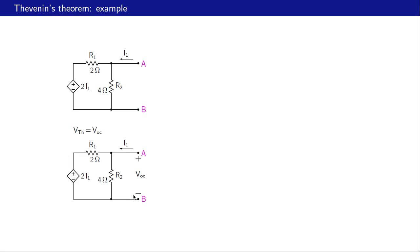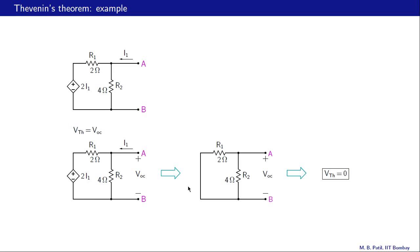In this open-circuit situation, the current I1 is zero, and therefore the voltage drop given by two times I1 is also zero. So we can replace this CCVS with a short circuit, and now we find that Voc is going to be zero volts. Therefore our Vth, the Thevenin voltage, is going to be zero volts.